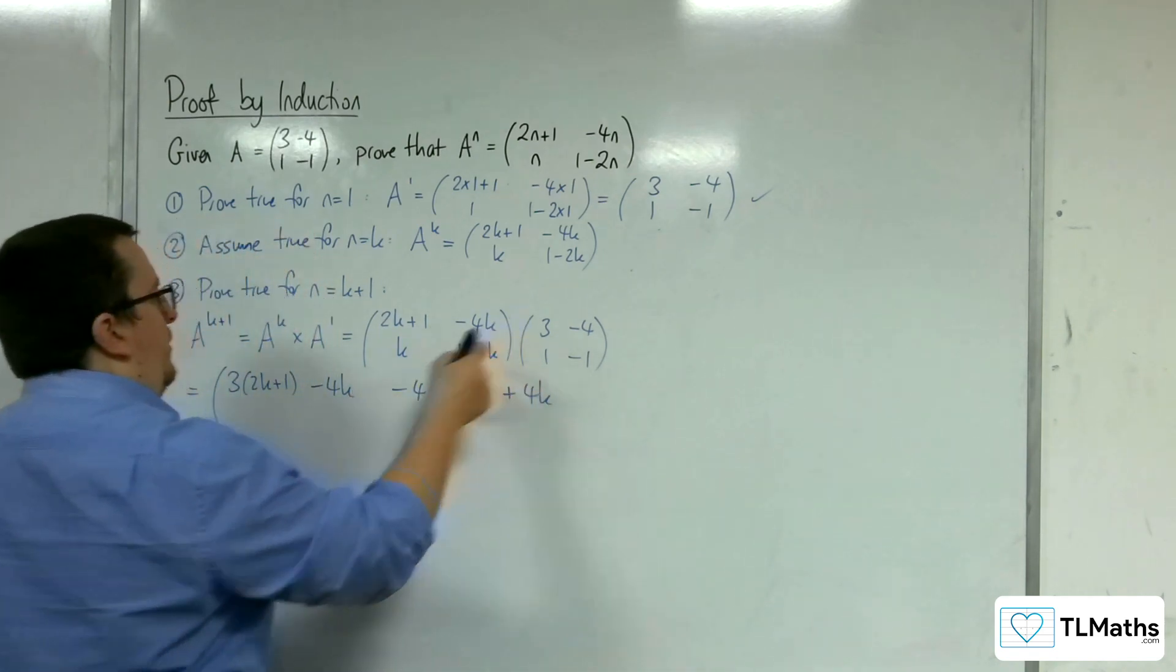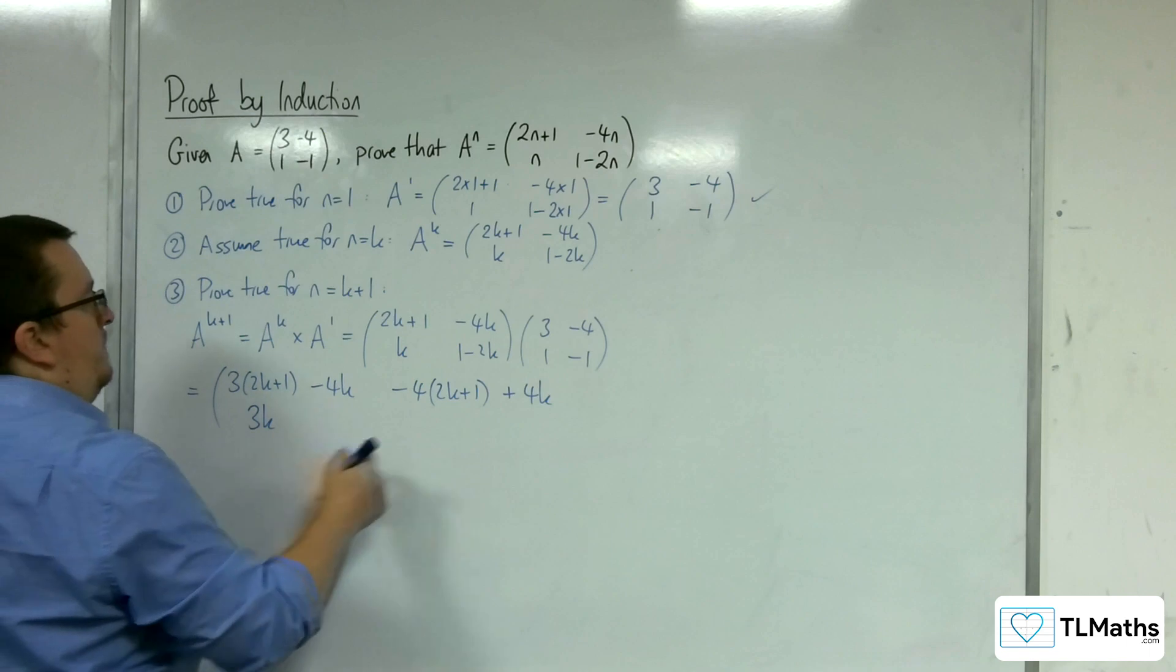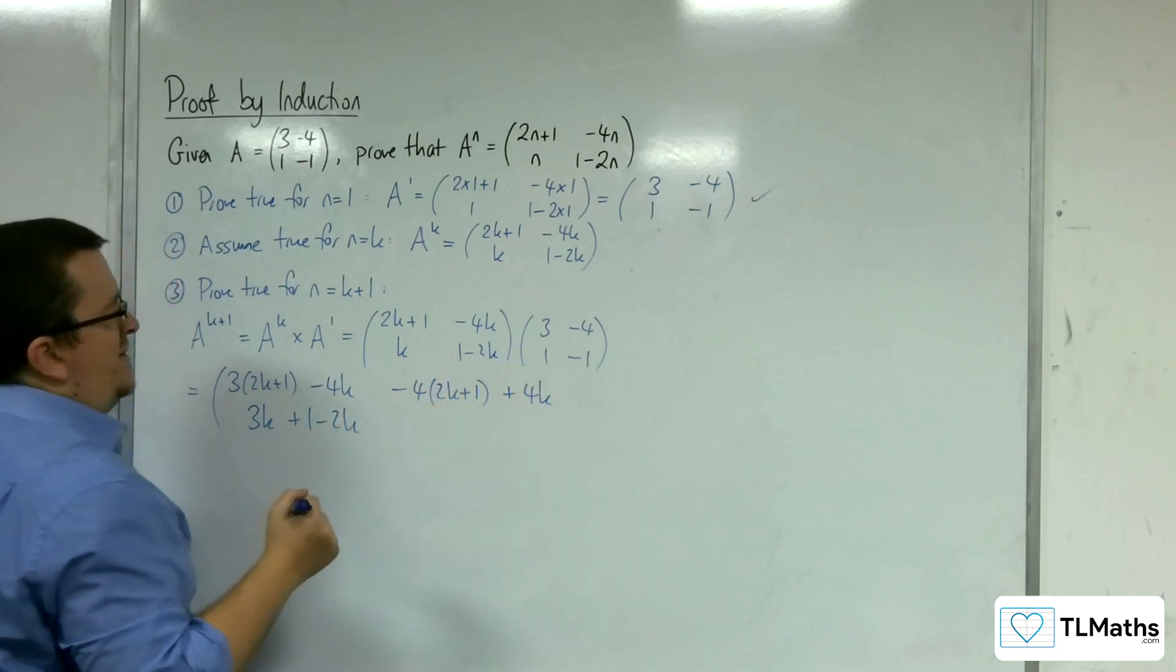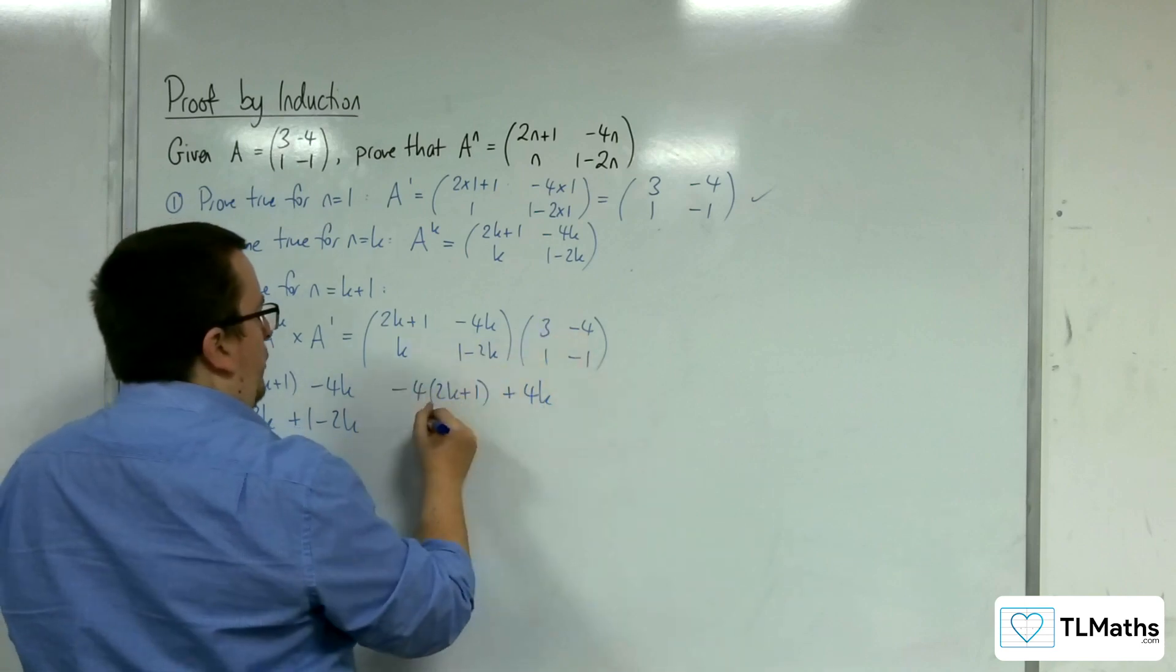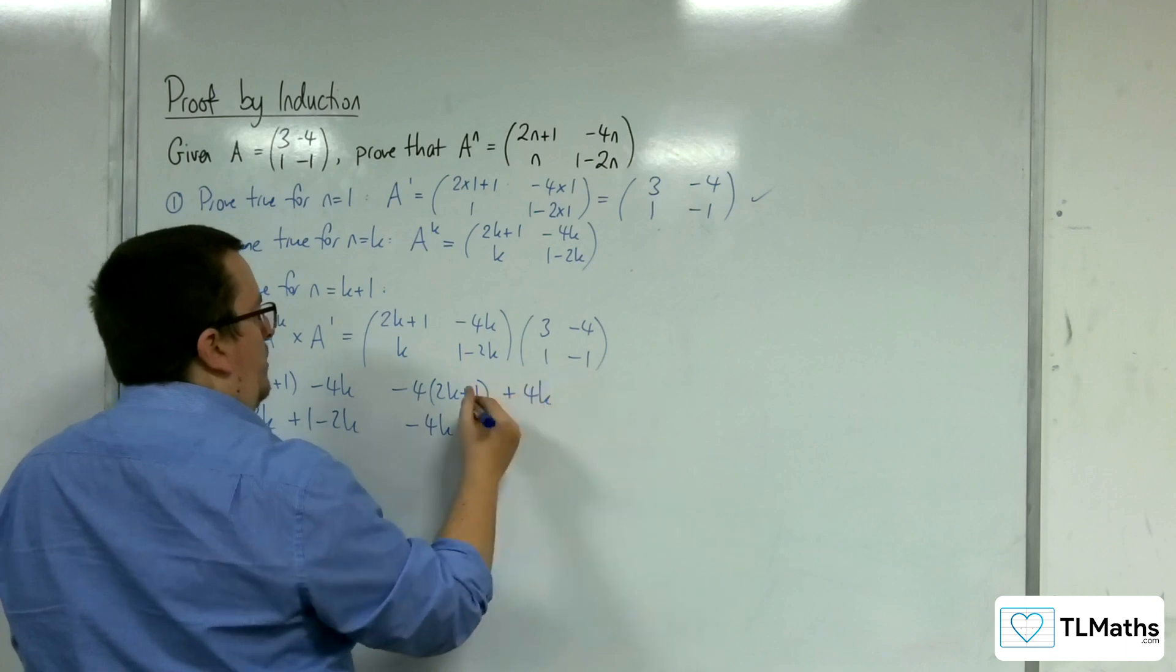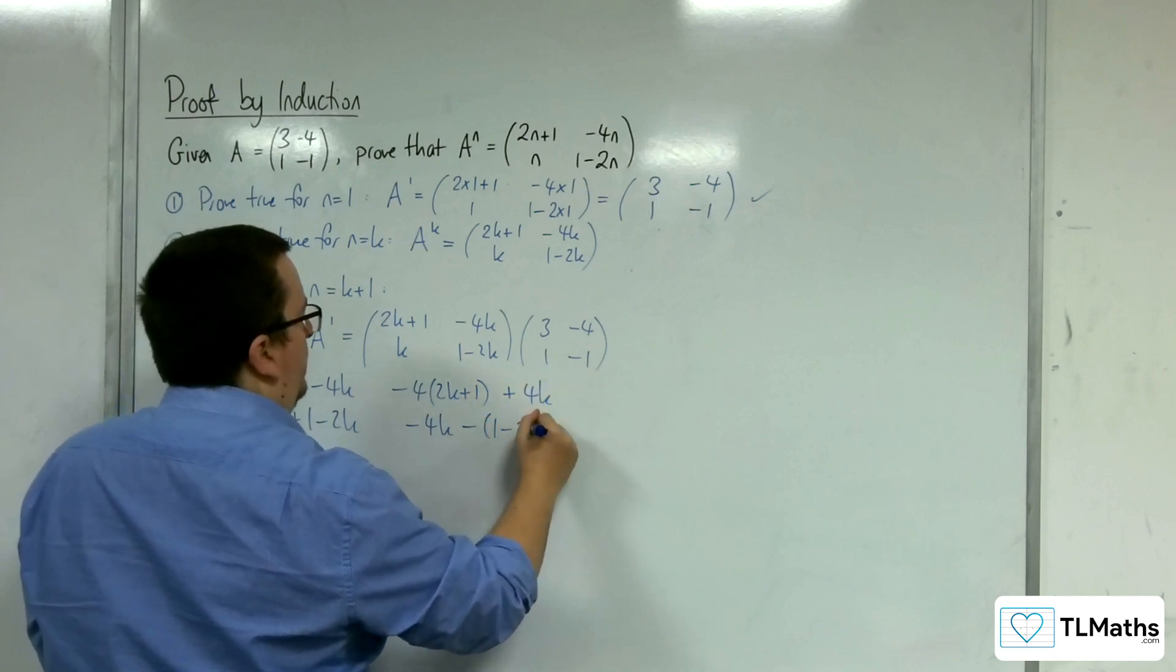We've got the k times the 3, so 3k, and the 1 minus 2k times the 1, so plus 1 minus 2k. And then we've got the k times the minus 4, so minus 4k, and the 1 minus 2k times the minus 1, so take away 1 minus 2k.